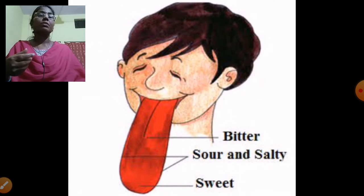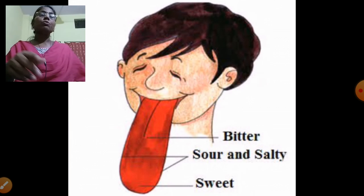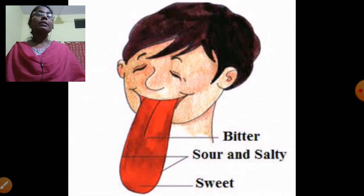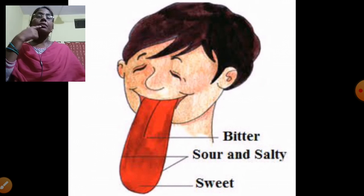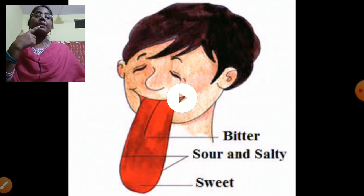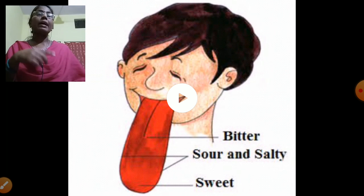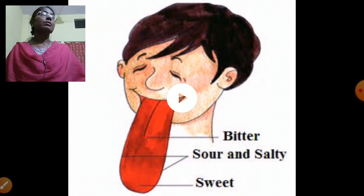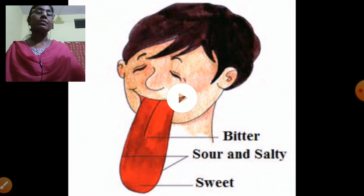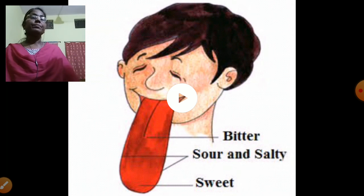So you have seen this picture — sweet, sour, and salty. The taste buds recognize these tastes on our tongue: sweet, sour, and salty.